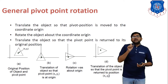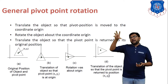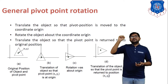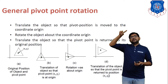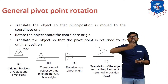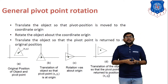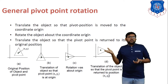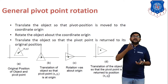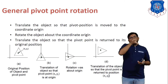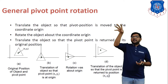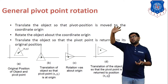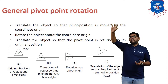We follow four steps. Step 1: translate the object so that the pivot position coincides with the coordinate origin. Step 2: rotate the object about the coordinate origin. Step 3: translate the object so that the pivot point is returned to its original position. In the figures: first is the original triangle with pivot point (X, Y); second shows the triangle translated to origin; third shows rotation about origin; and the last shows the final rotated position.